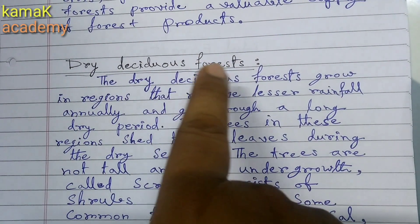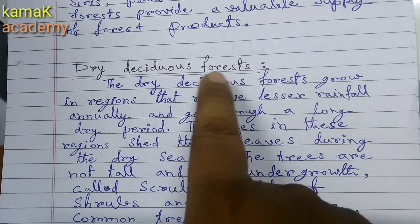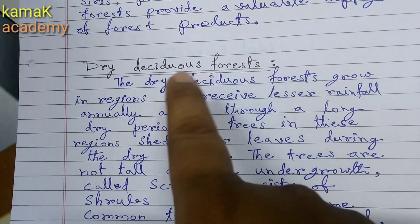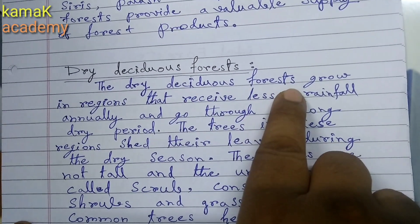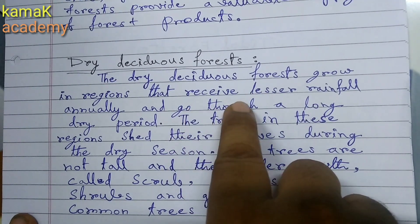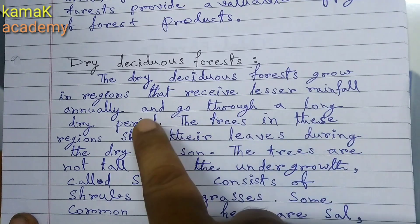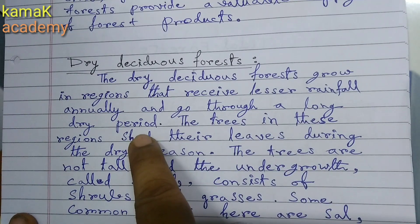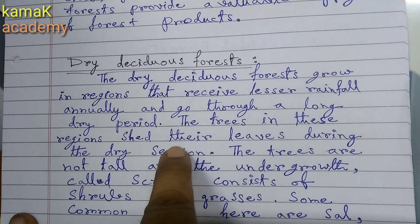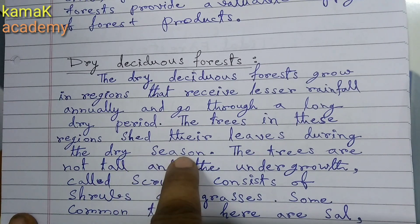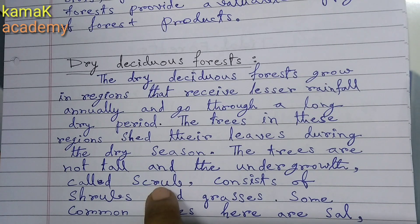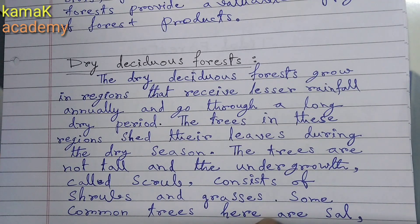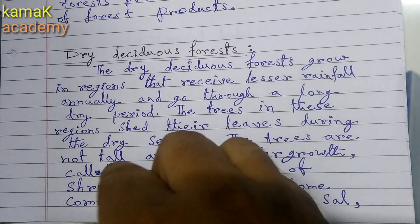Next point: Dry Deciduous Forest — use black ink, give underline, colon. The dry deciduous forests grow in regions that receive lesser rainfall annually and grow through a long dry period. The trees in these regions shed their leaves during the dry season. The trees are not tall and the undergrowth, called scrub, consists of shrubs and grasses. Some common trees here are Sal.